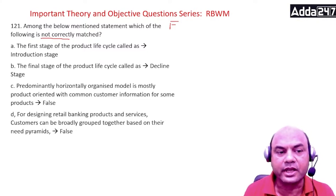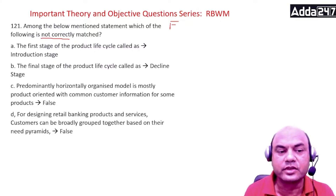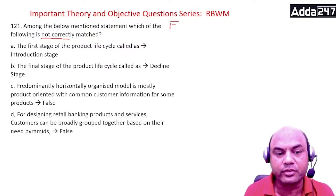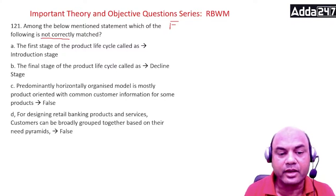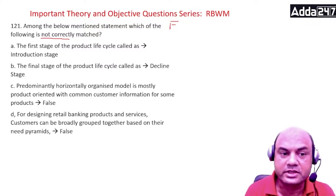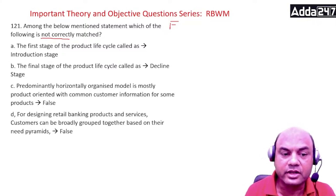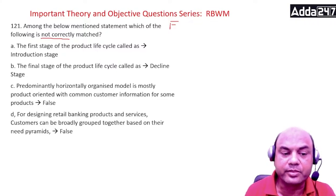The first stage of the product life cycle is known as introduction. The final stage of the product life cycle is known as decline. Predominantly horizontally organized model is mostly product oriented with a common customer database for some of the products — and this is marked as false. For designing retail banking products and services, customers can broadly be grouped together based on their need pyramids — also marked as false.